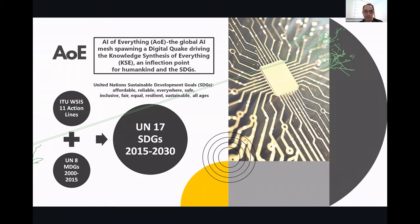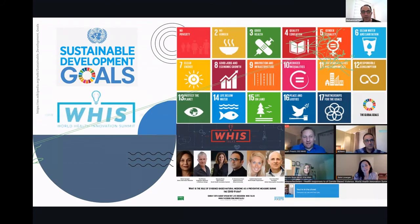The SDGs aim to tap into affordable, reliable, safe, inclusive, fair, equal, resilient, and sustainable care and services for all ages and for everybody. Everyone has the right to live a better life, and that is why at the global governance level the UN is committed to these 17 SDG goals.